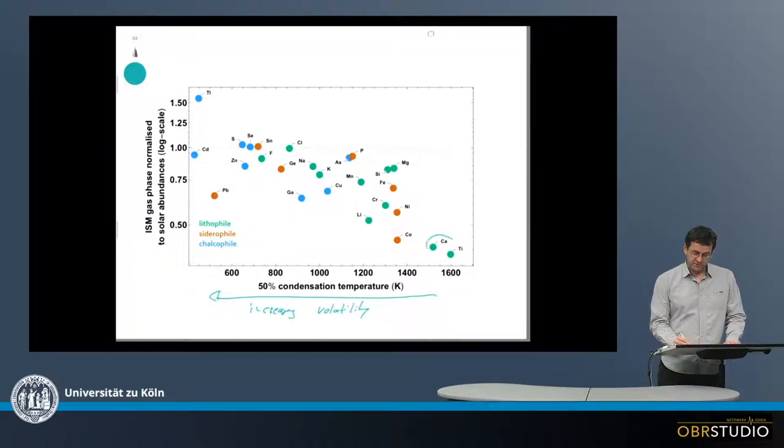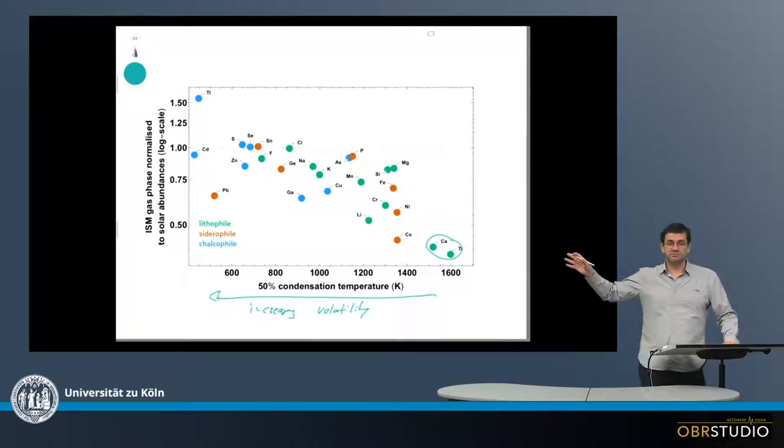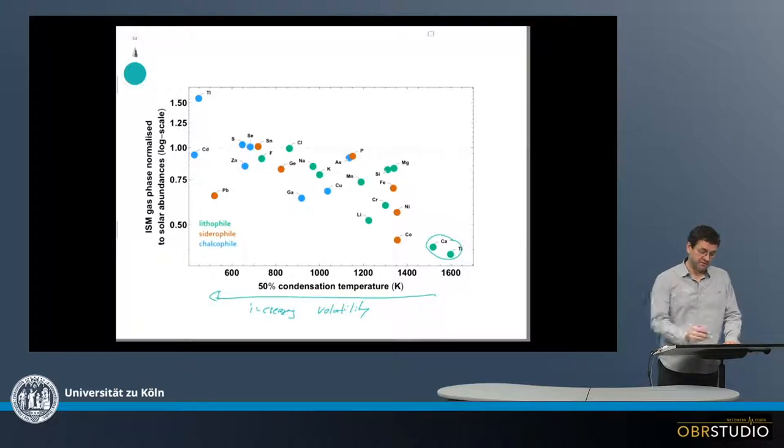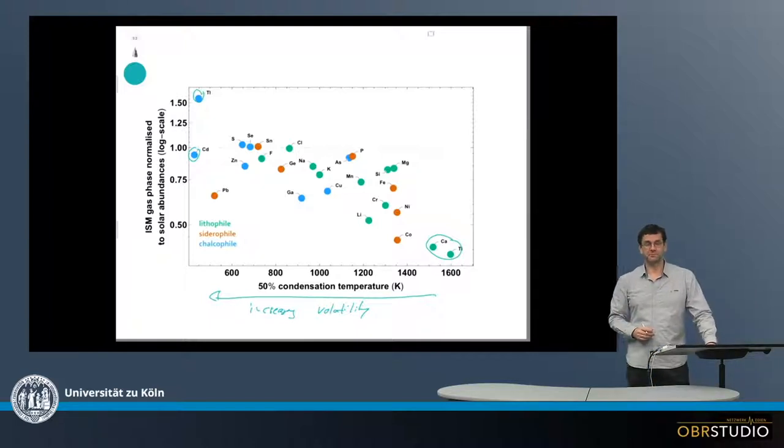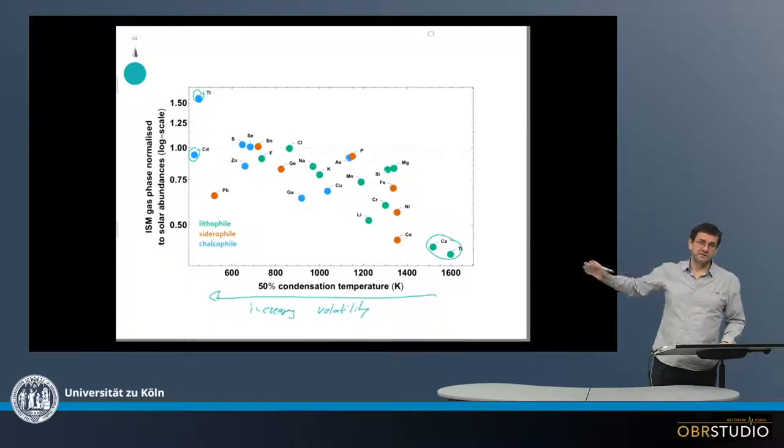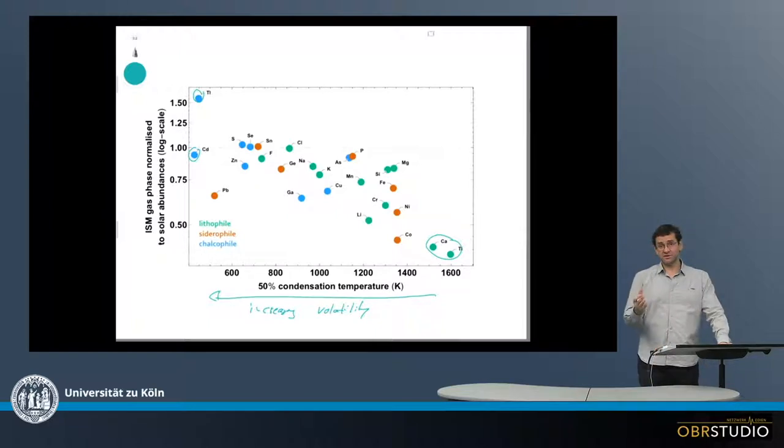So for example, down to the right here is calcium and titanium, which are highly refractory elements, and on the other side there's cadmium and thallium, highly volatile elements. Now on the y-axis, there's the composition of the gas normalized to solar values and on a log scale. That's a normalized plot.